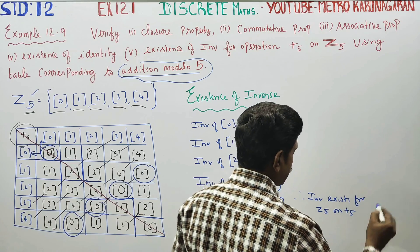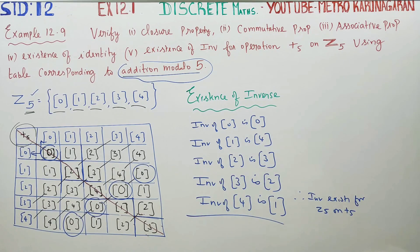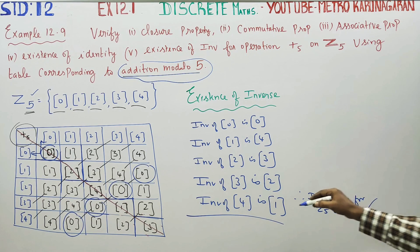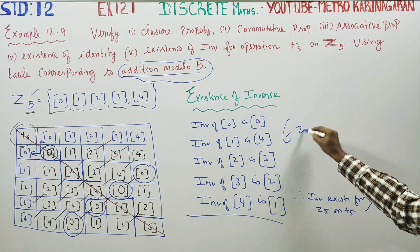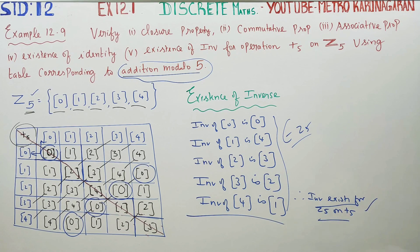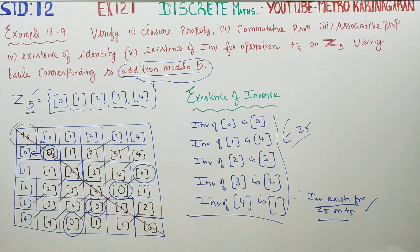Therefore on Z₅ with operation plus₅, we have proved: closure property, commutative property, associative property, existence of identity, and existence of inverse. All properties are verified for Z₅ under addition modulo 5. Thank you.